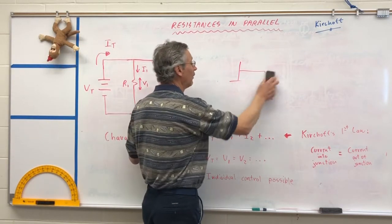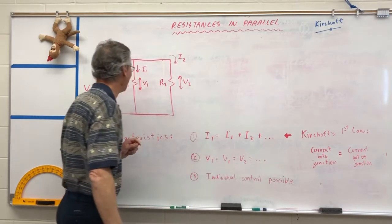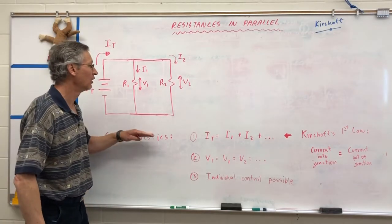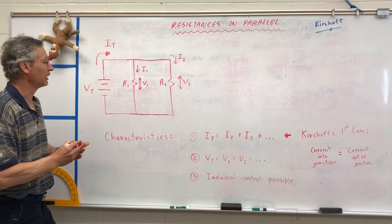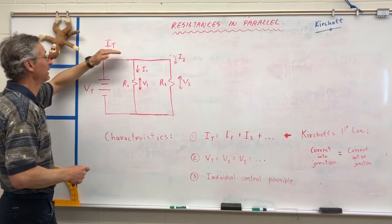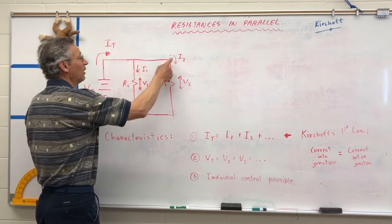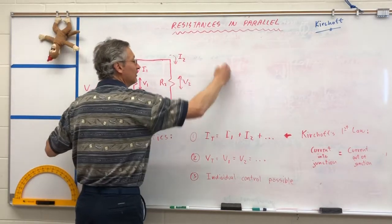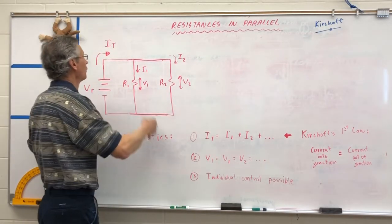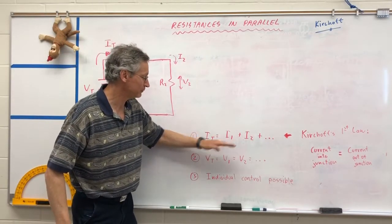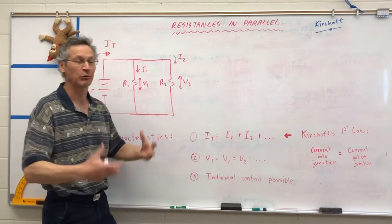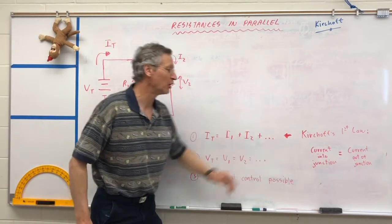Now, let's take a close look at some of the characteristics of a parallel circuit. The first characteristic: the total current is going to be equal to the sum of the branch currents — equal to I1 plus I2. If you have 50 more branches, you'll have to add on 50 more currents to get the total current. The total current is equal to the sum of all the different branch currents, however many branches there are.